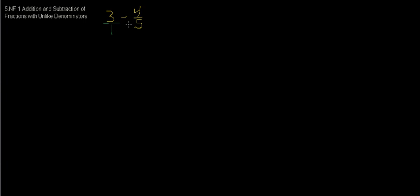We want to get both of these numbers to have the same denominator. If we list multiples of 1: 1, 2, 3, 4, 5. I see that 5 is a shared multiple, so 5 is the LCM.